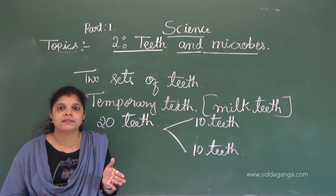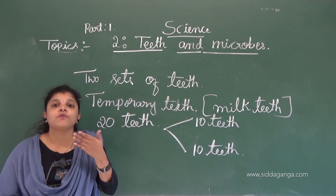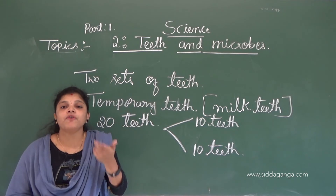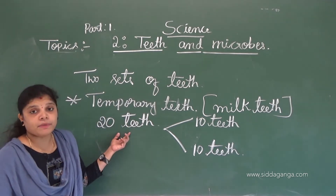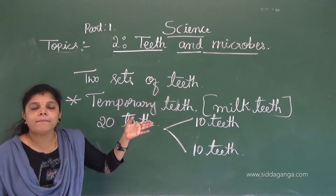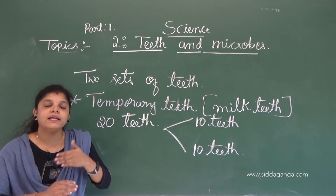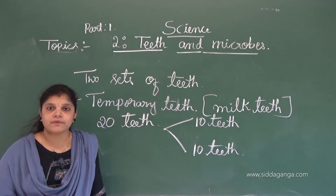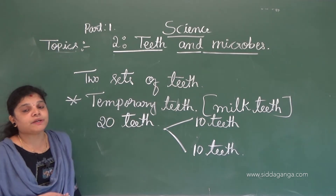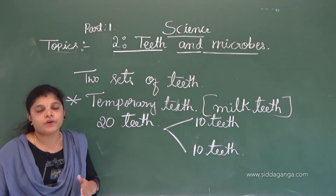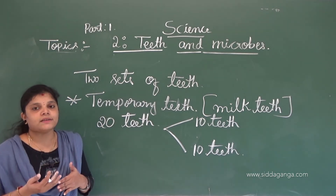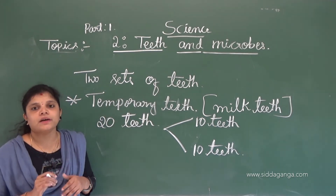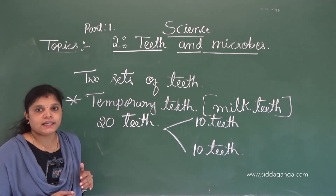Why are they called temporary teeth? Because after six years — from six to twelve years — these teeth start to fall down. After they fall down, new teeth start to grow in the same place. That's why they are called temporary teeth.